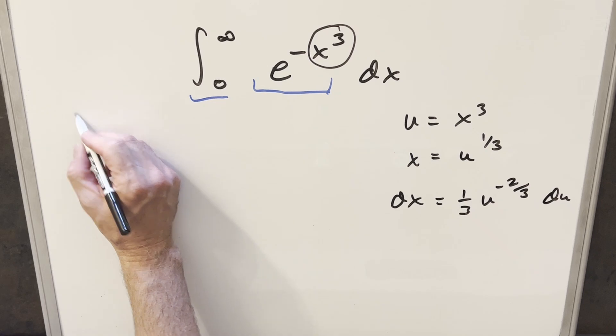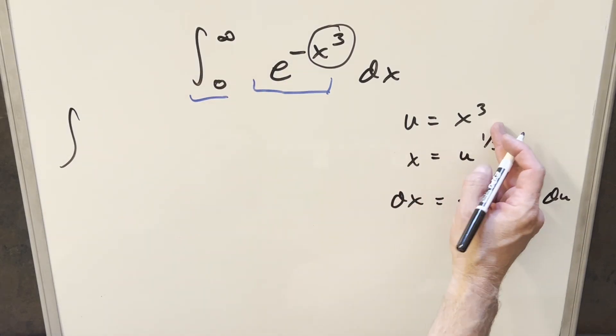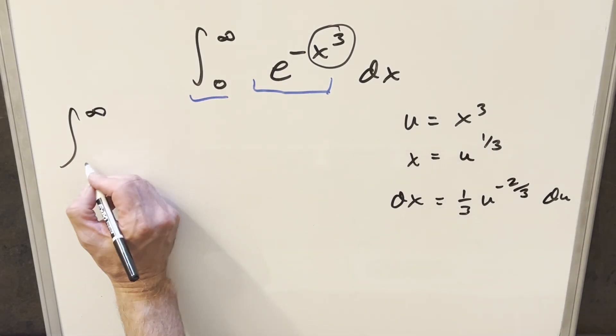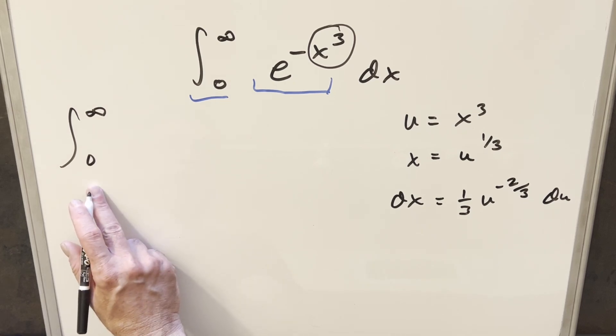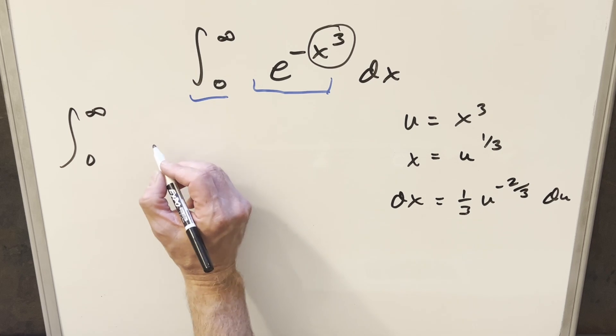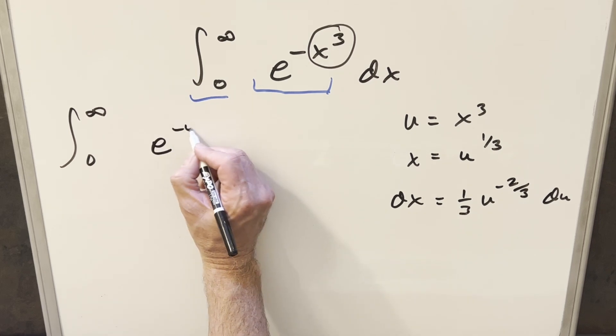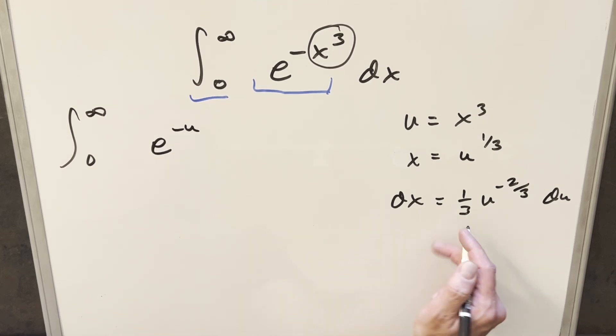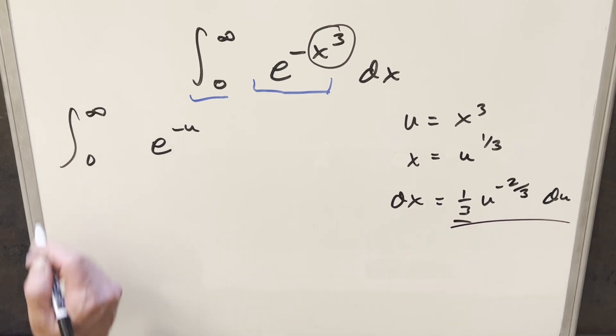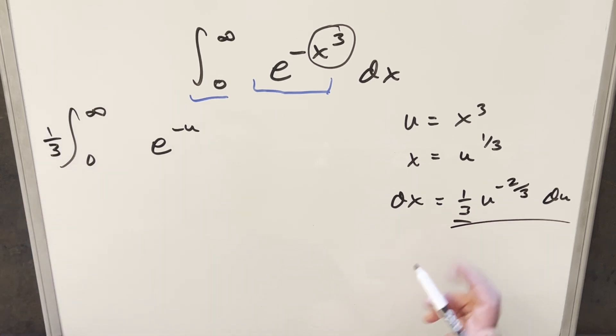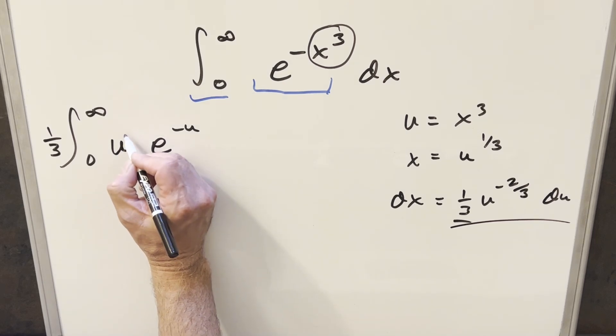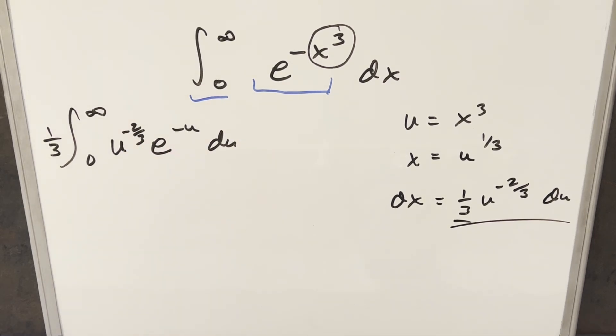Now I'll substitute. First, infinity cubed is still infinity, and zero cubed is still zero, so our bounds stay the same. This piece becomes e^(-u). For dx, I'll reorder: bring the 1/3 up front as a constant, then u^(-2/3), then e^(-u) du. Notice this is set up perfectly to use the gamma function.